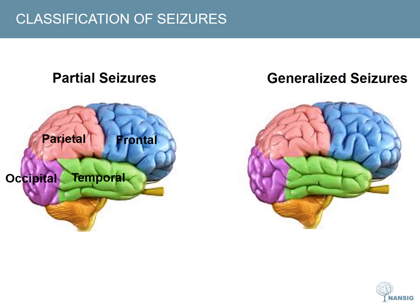Next let's talk about generalised seizures. These arise from subcortical structures and impair both hemispheres. There are five types. Absent seizures are when the patient stares vacantly and is almost switched off to the environment. Myoclonic seizures are sudden brief generalised muscle contractions. Tonic seizures are sudden sustained muscular contraction. Atonic seizures are very rare and are characterised by a loss of muscle tone and a sudden fall.